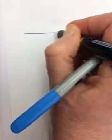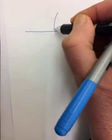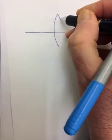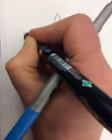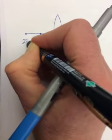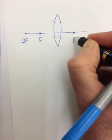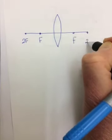I just want to flip this over so we can draw one more diagram here. There are two equations for lenses. One more diagram. So here's F, here's 2F, here's F, here's 2F.